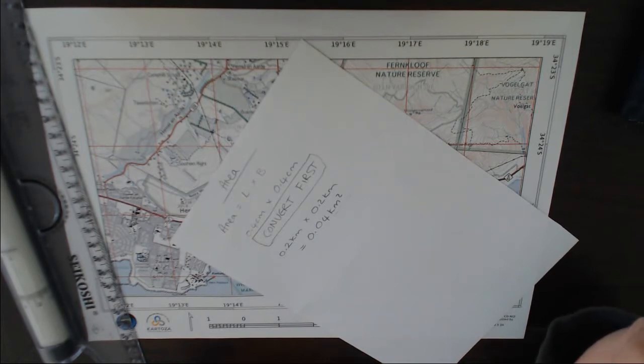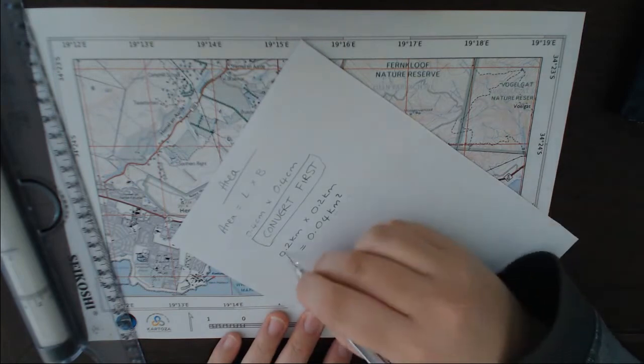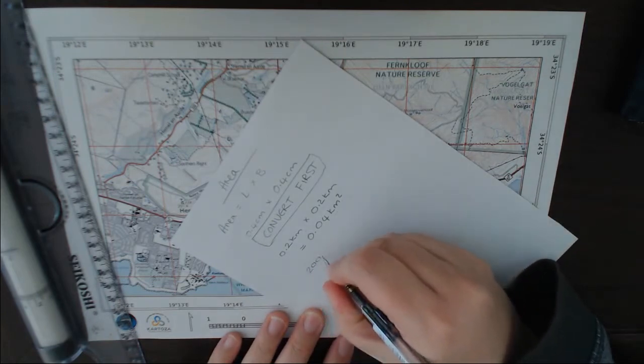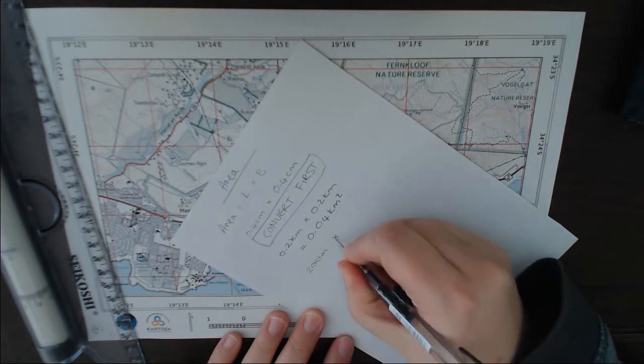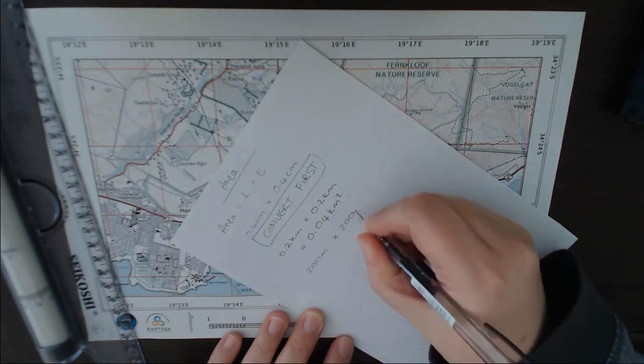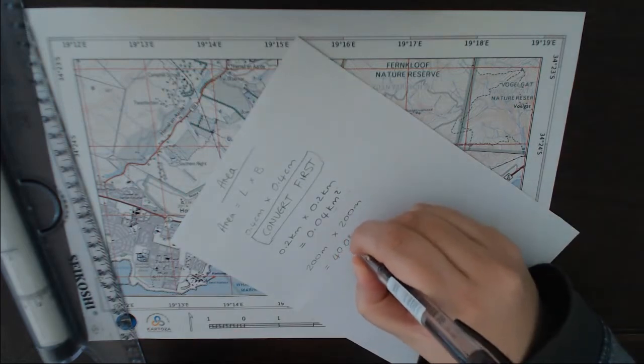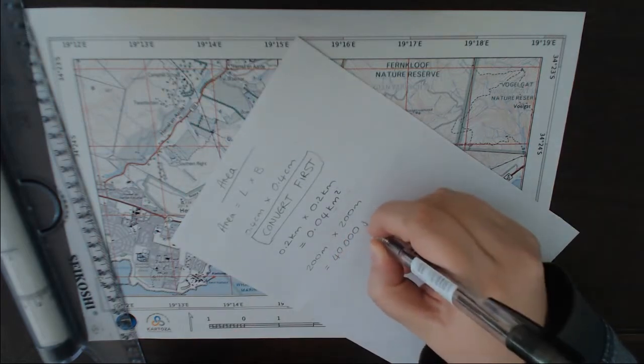You might be going, 'well gosh, those are such tiny numbers, can't we do that in meters instead?' Well, let's try. That is 200 meters times 200 meters, and that will give us 40,000 square meters. So we're going to stick with our square kilometer option.